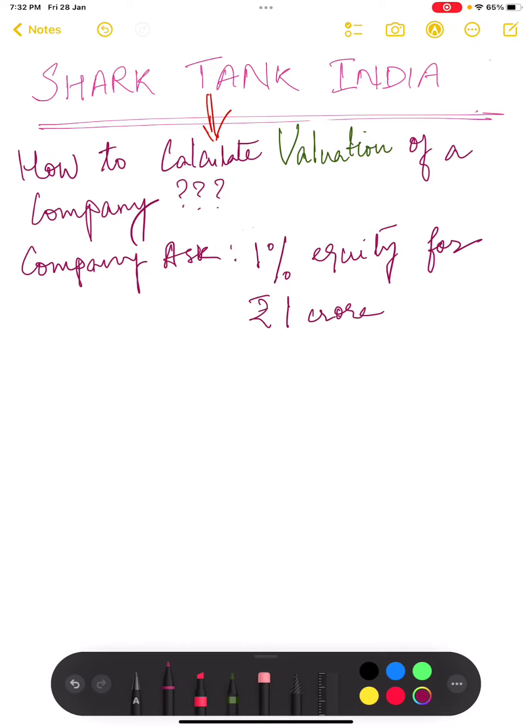You see entrepreneurs who come and are ready to offer equity for a certain amount of money they want to raise from the sharks. So when they provide the percentage of equity and the amount, how do these investors calculate the valuation of a company and how do they negotiate? Let's